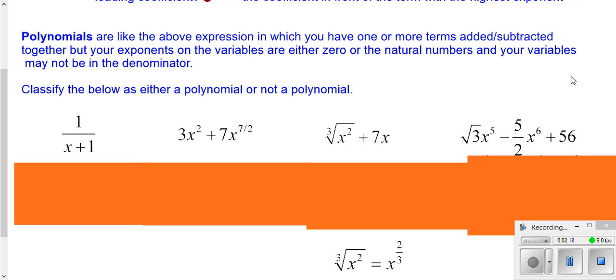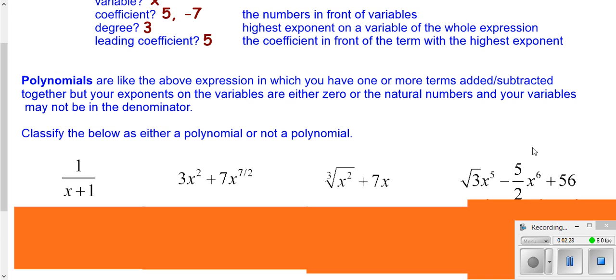And also, we can't have variables in the denominator. Because remember, if it's in the bottom, that's where you have a negative exponent. So, are these polynomials or not polynomials? And why?